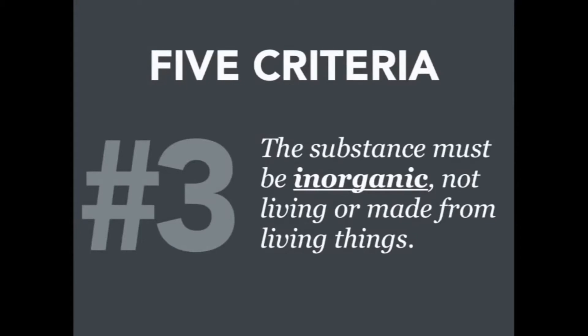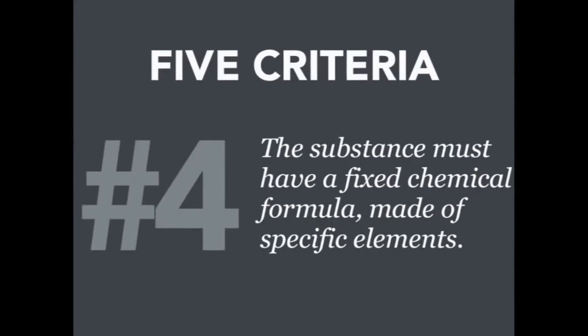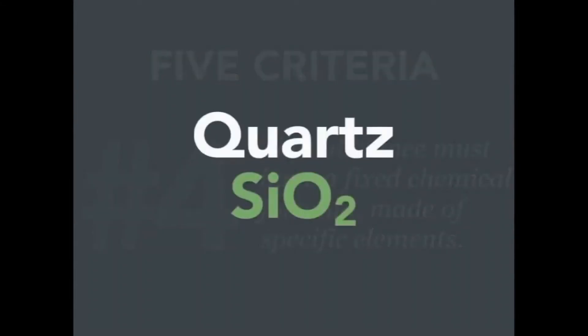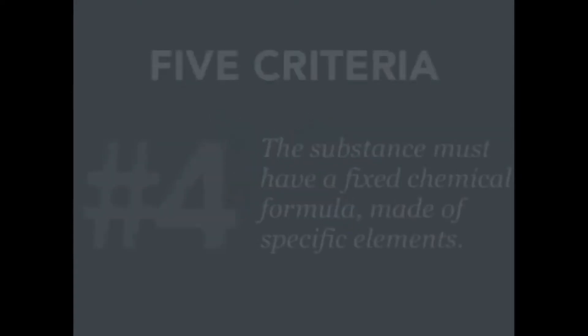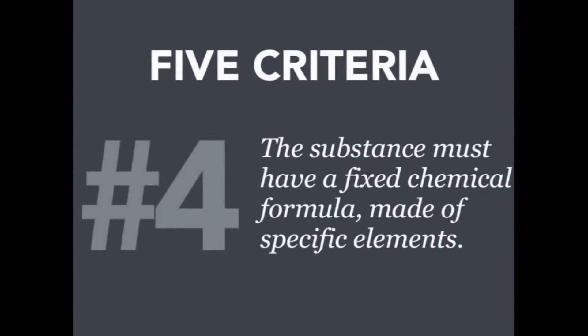Number three: the substance must be inorganic — not coming from or made of living things. Tree branches, leaves, and coral cannot be considered minerals because they are organic. Number four: the substance must have a fixed chemical formula — a specific combination of elements. For example, quartz is composed of one silicon bonded to two oxygen atoms (SiO₂), and pyrite (fool's gold) has the formula FeS₂.